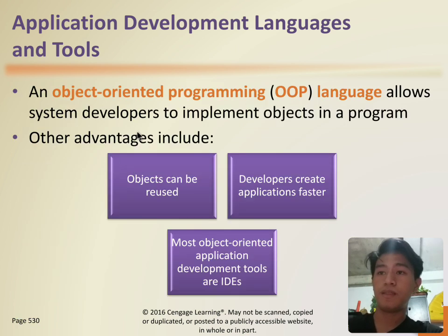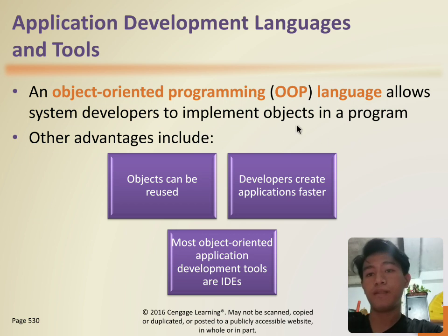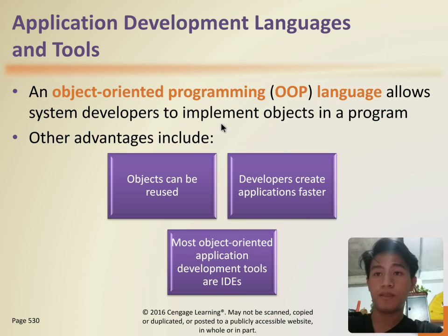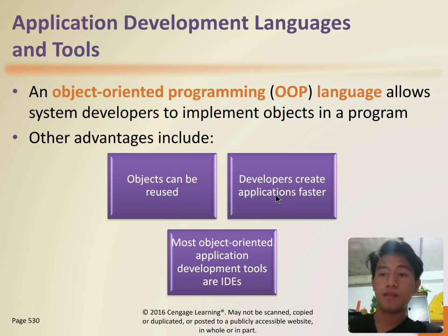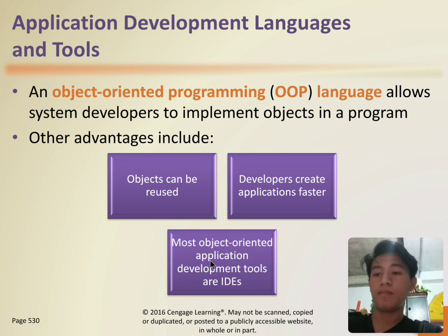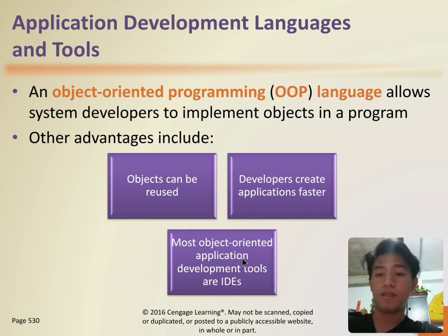An object-oriented programming, or OOP, language allows system developers to implement objects in a program. Developers implement objects through the program. Other advantages include: objects can be reused, and developers can create applications faster.